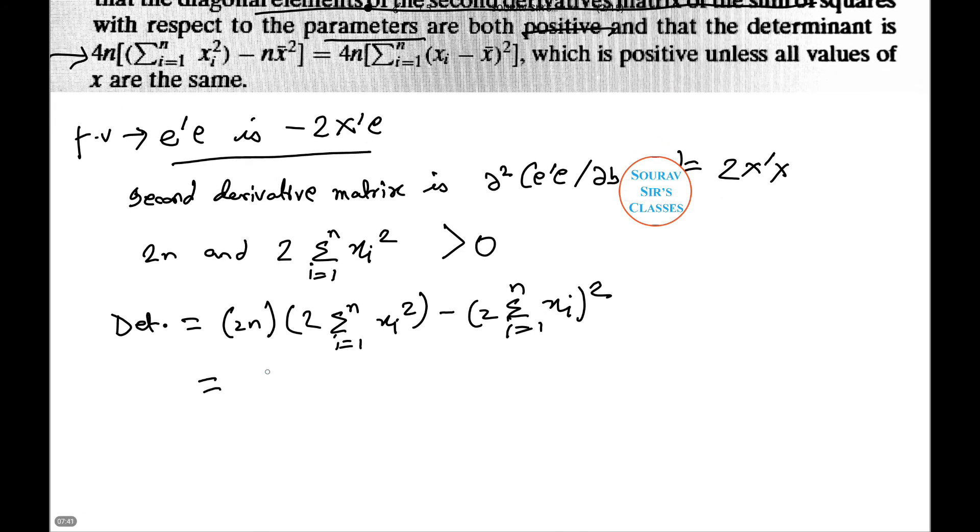Upon simplification, this comes to 4n summation x_i^2 minus 4n x bar^2.